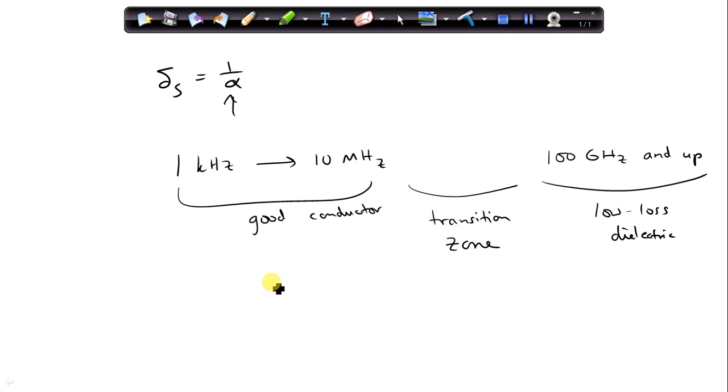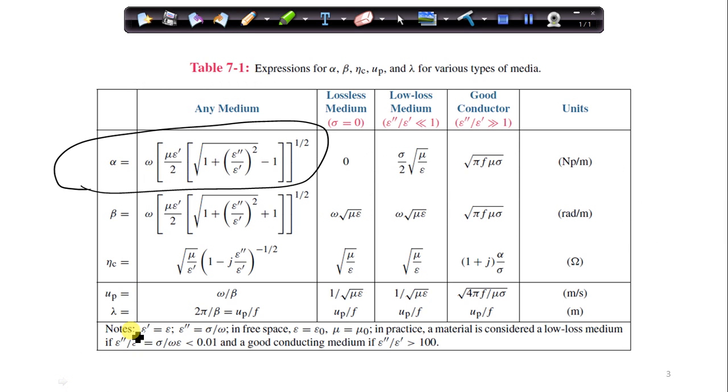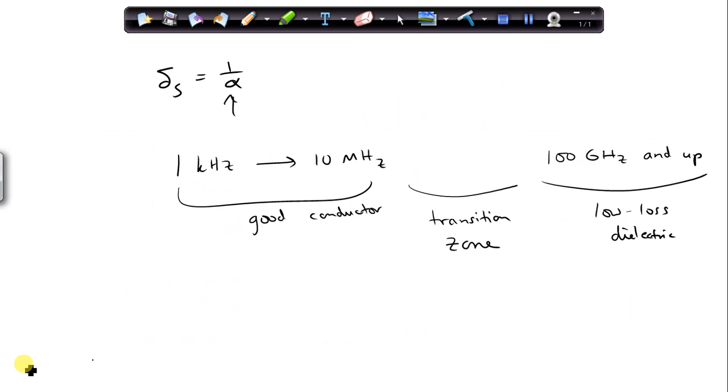We could use the good conductor expression here. So if we look at table 7-1, the good conductor, alpha is square root of pi f mu sigma. So alpha is pi f mu sigma, square root of that.